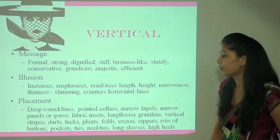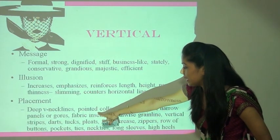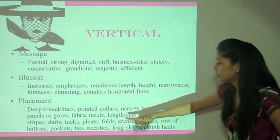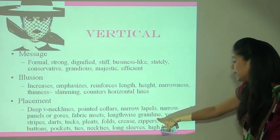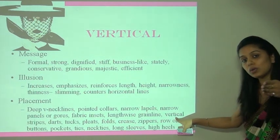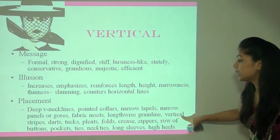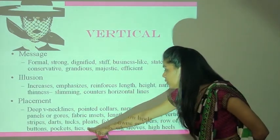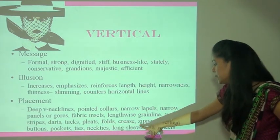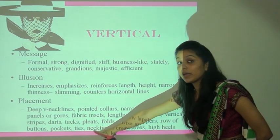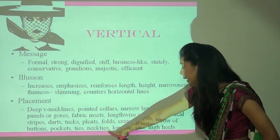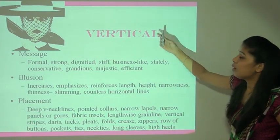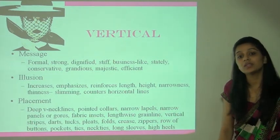Placements for vertical lines include deep V-necklines, pointed collars, narrow lapels, narrow panels or gores, fabric inserts, lengthwise grain lines, vertical strips, darts, tucks, pleats, folds, creases, zippers, rows of buttons, pockets, ties, neckties, long sleeves, and high heels. In sab areas mein hum almost vertical lines ka use karte hain.